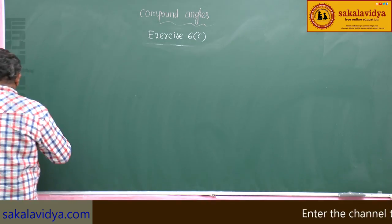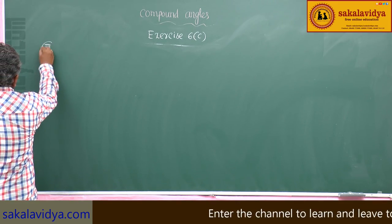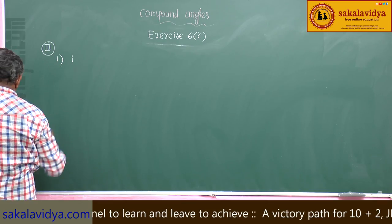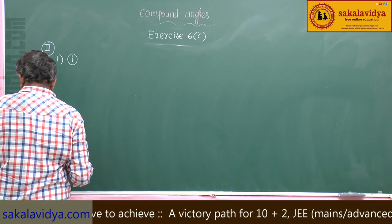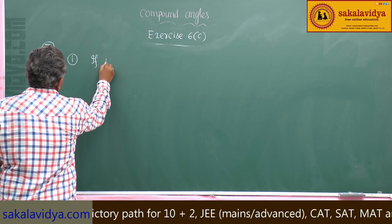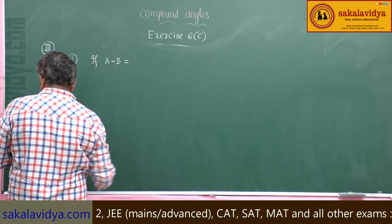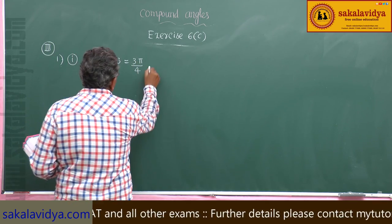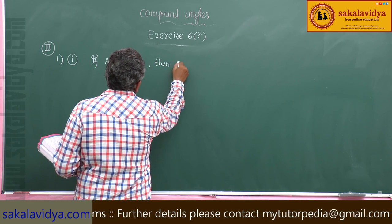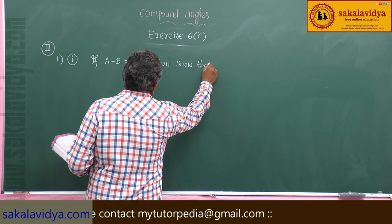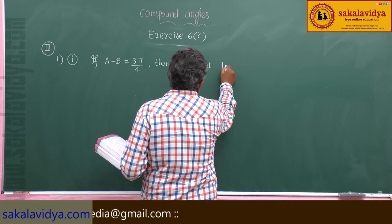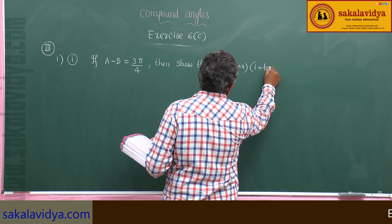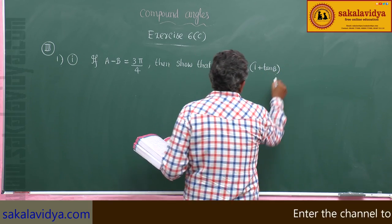Third section, first problem, first bit. If A minus B equals 3π by 4, that is 135 degrees, then show that 1 minus tan A into 1 plus tan B is equal to 2.